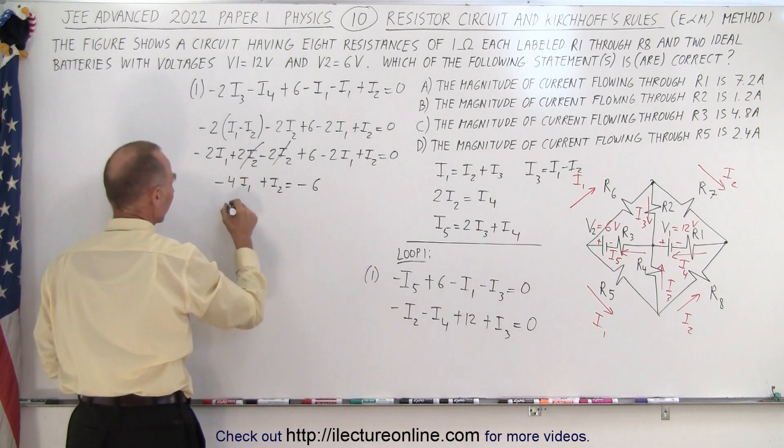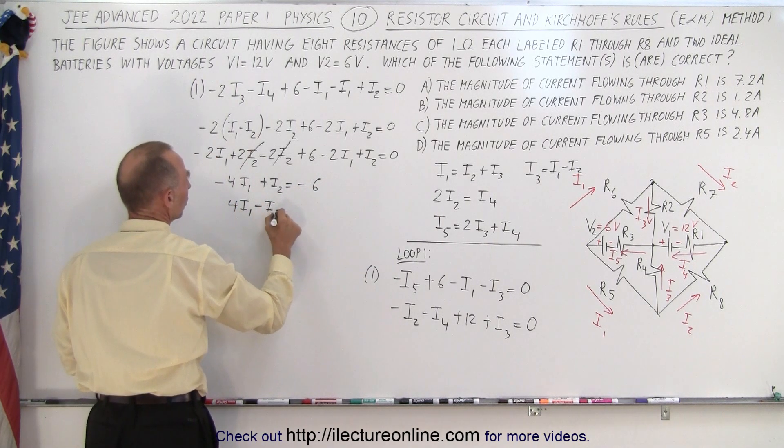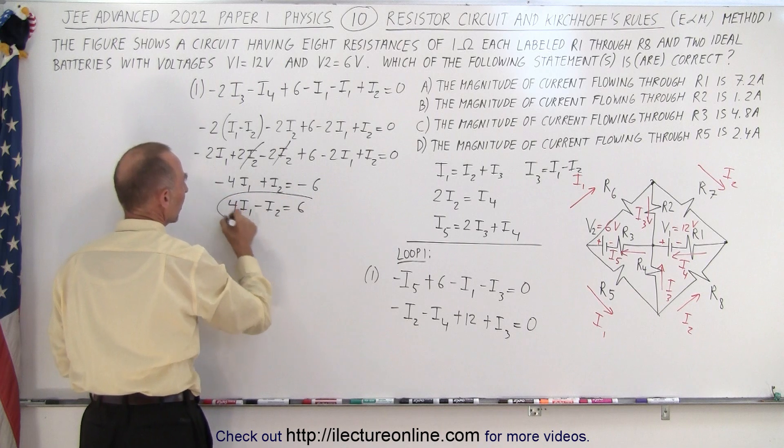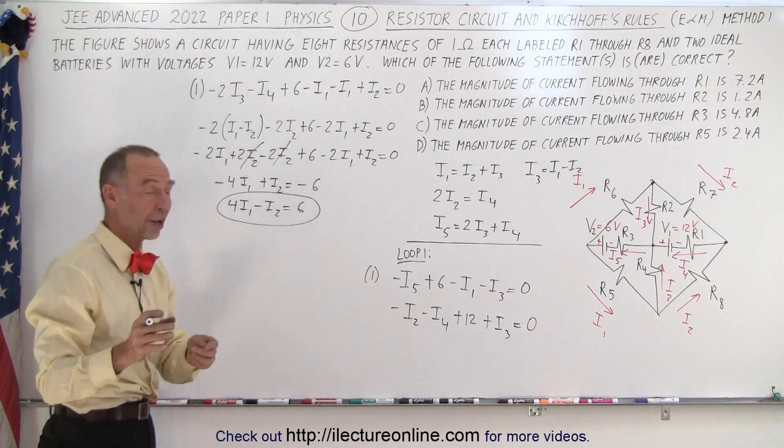And changing the signs, I get 4I1 minus I2 equals positive 6. There's my first of the two equations with just I1 and I2.